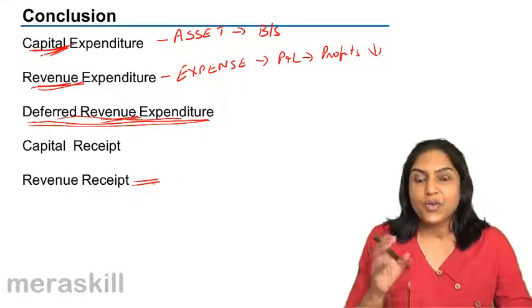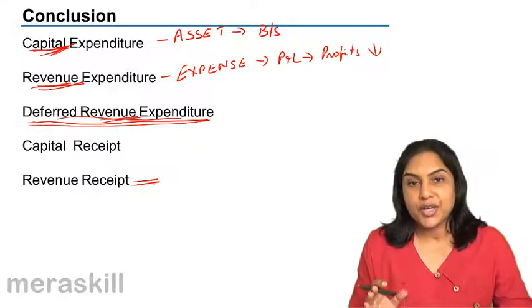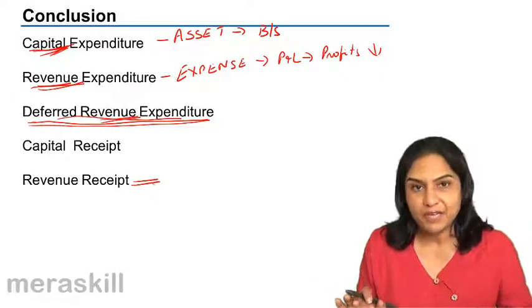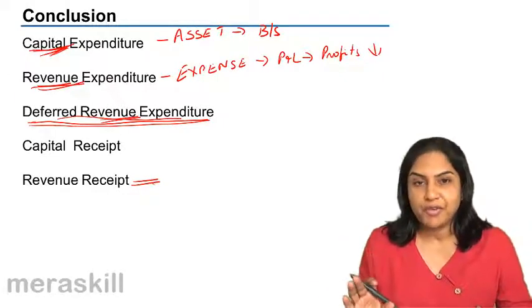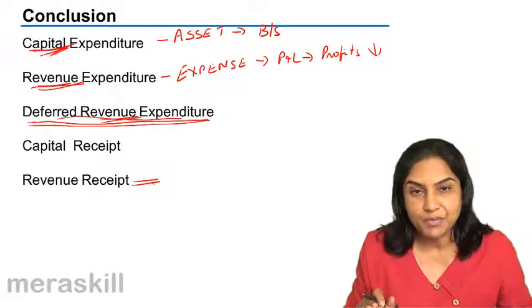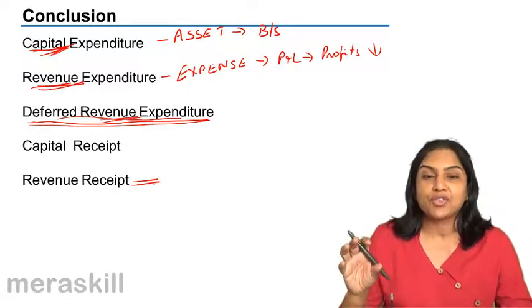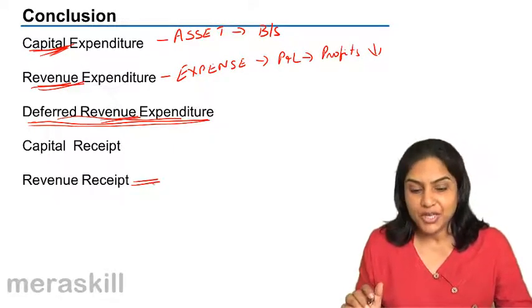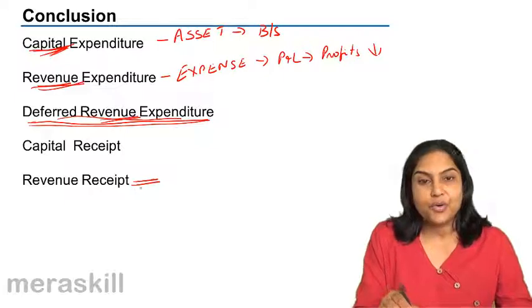An example was where we took sale of machinery, machinery value 50,000 in our books, we sell it for 55,000. Out of this 55,000, 50,000 has reduced the asset position in our business and 5,000 which is the profit, which is a profit on sale of the machinery is taken as revenue receipt.